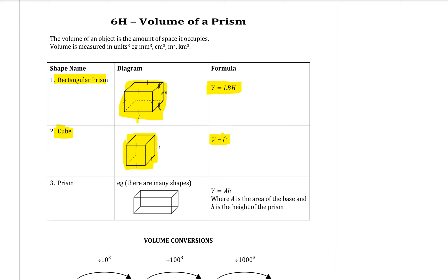The third formula you need to know is the formula for the volume of any prism — it could be a rectangular prism, a triangular prism, or a trapezoidal prism. Whatever type of prism it is, to find its volume you use the formula V equals AH, where A is the area of the base of the shape. If it's a triangle base you'd find the area of a triangle; if it's a trapezium base you find the area of a trapezium, and it changes depending on what type of prism you have.